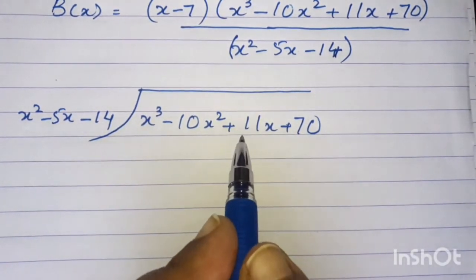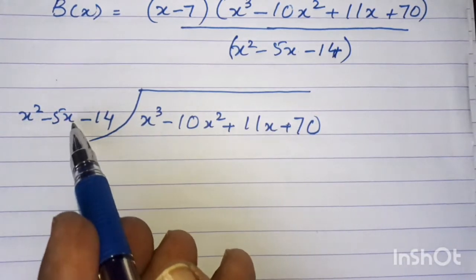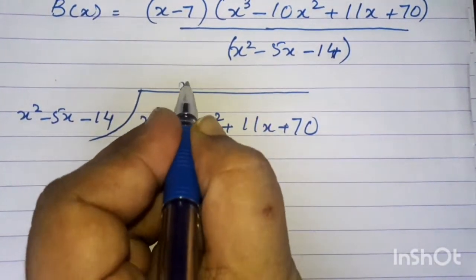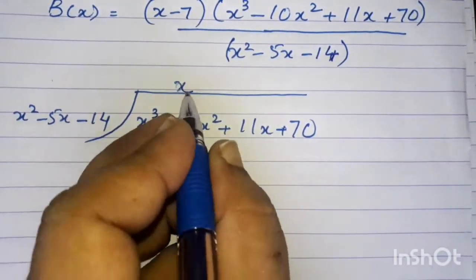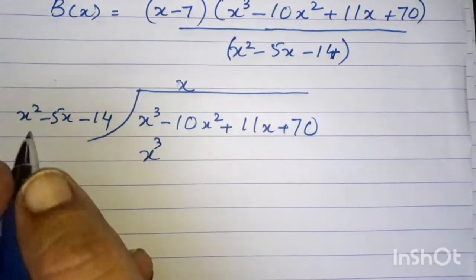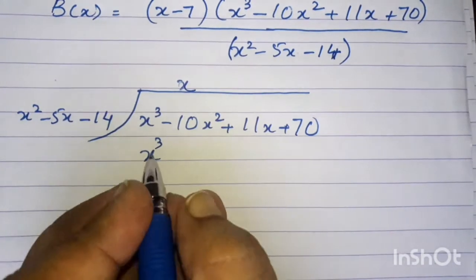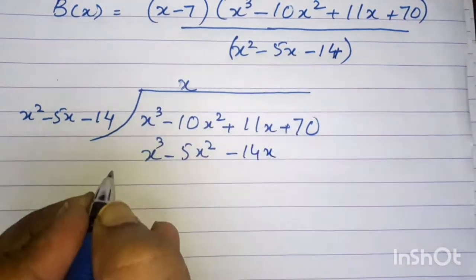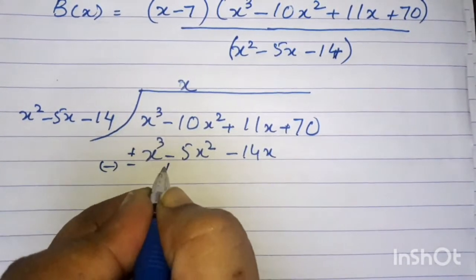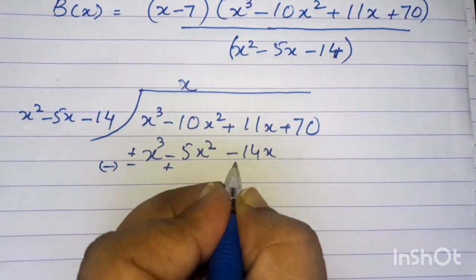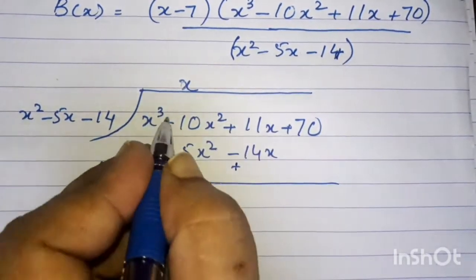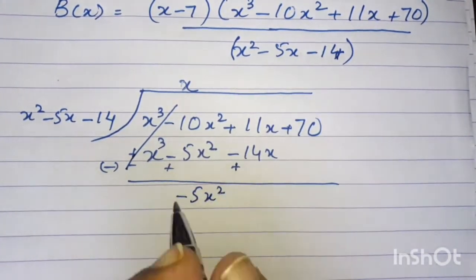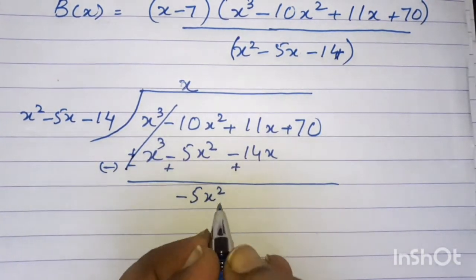Divide x cubed minus 10x squared plus 11x plus 70 by x squared minus 5x minus 14. Multiply x squared by x to get x cubed. Multiplying by minus 5x gives minus 5x squared and minus 14x. Applying subtraction and sign change, 5x and 10x gives minus 5x squared, and adding 11 and 14 gives 25x plus 70.